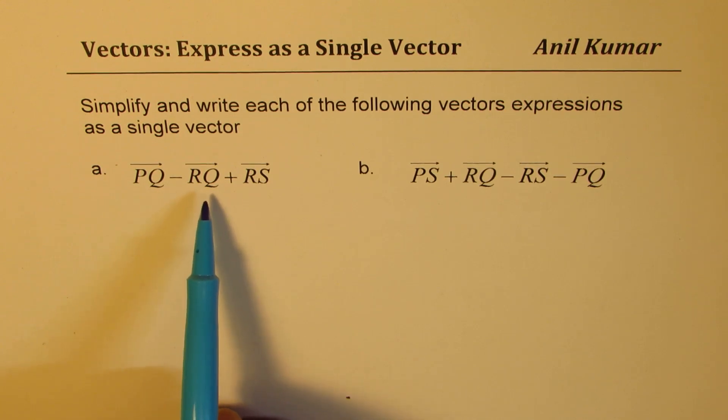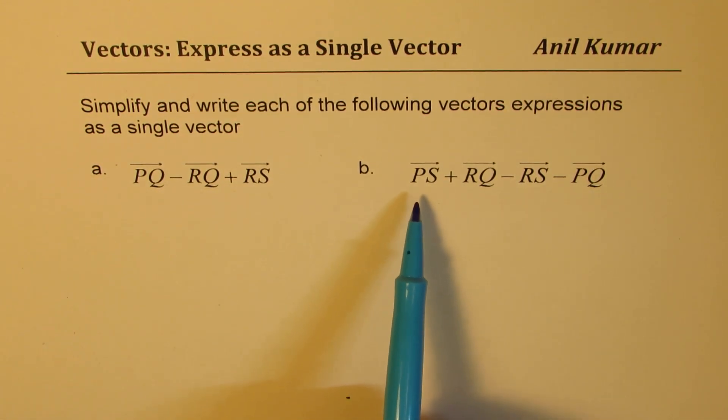PQ minus RQ plus RS is equal to what? And the vector PS plus RQ minus RS minus PQ is equal to what?